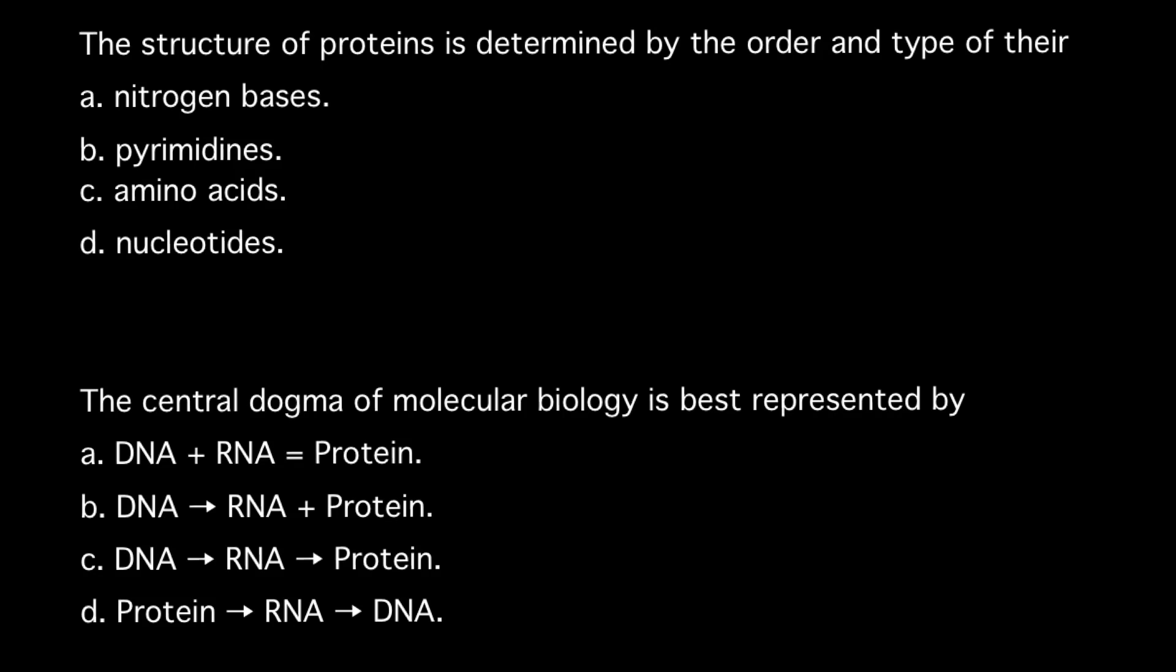And here is the first question. The structure of proteins is determined by the order and type of their: answer A, nitrogen bases; B, pyrimidines; answer C, amino acids; and D, nucleotides.